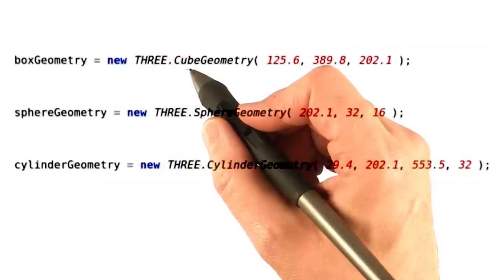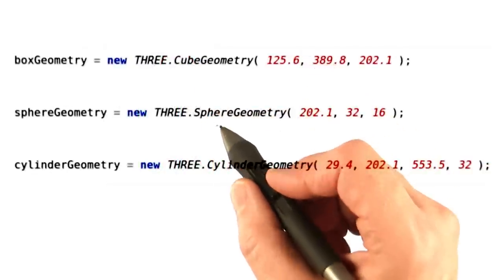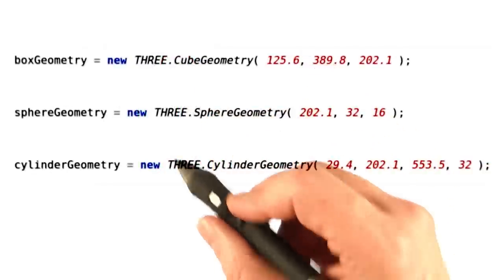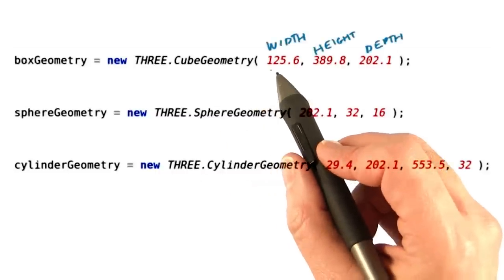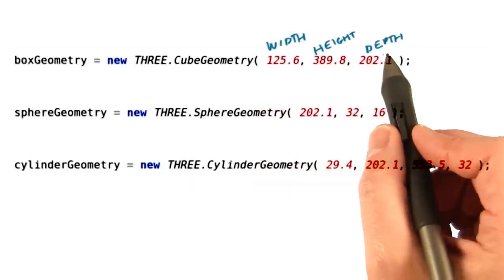The three objects you'll use are the cube, well, box, sphere, and cylinder. Here are the typical calls for creating these three objects. For the cube, the numbers passed in are the width, height, and depth of the box.